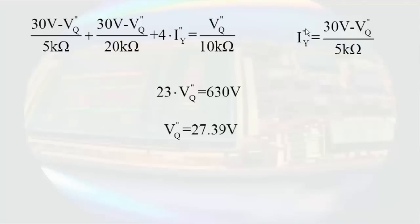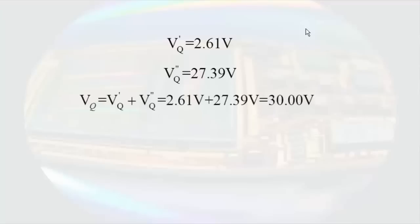So if we take the results from the first analysis that VQ prime equals 2.61 volts and the results from the second analysis VQ double prime equals 27.39 volts, VQ must be the sum of them resulting in VQ equal to 30 volts. I encourage you to go back and verify this by analyzing the original circuit using a different method.